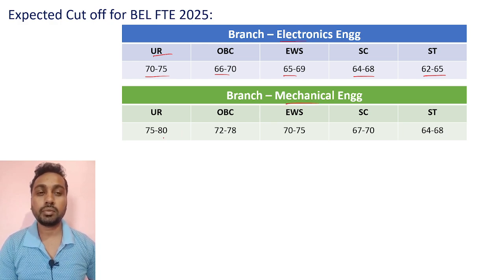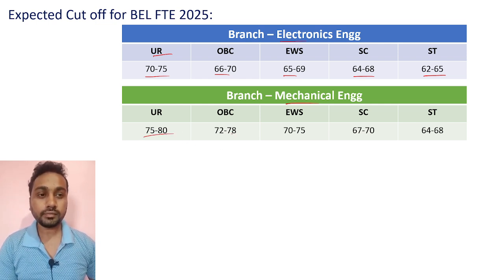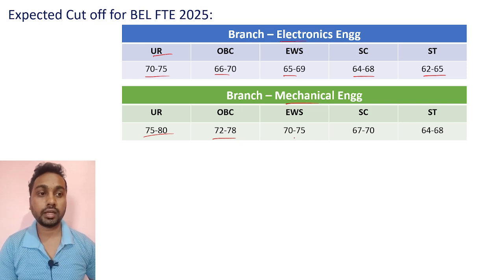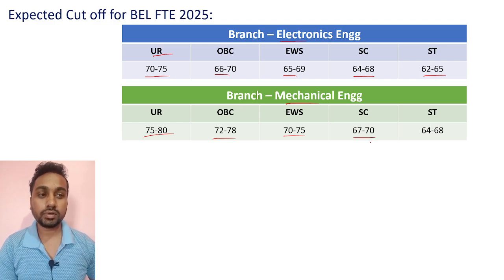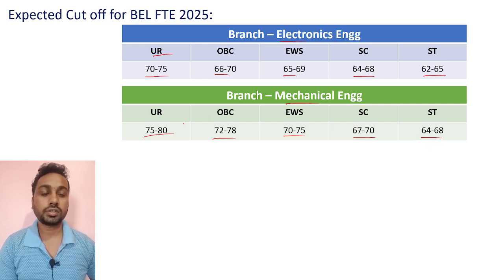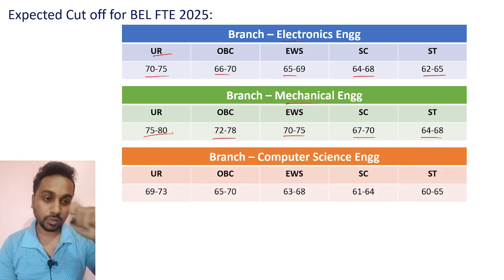For Mechanical engineers, the expected cutoff is: Unreserved category 75–80, OBC 72–78, EWS 70–75, SC 67–70, and ST 64–68.